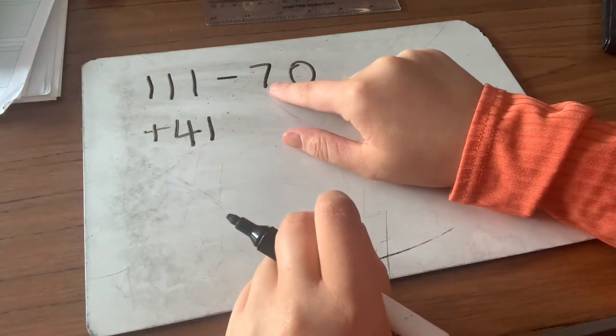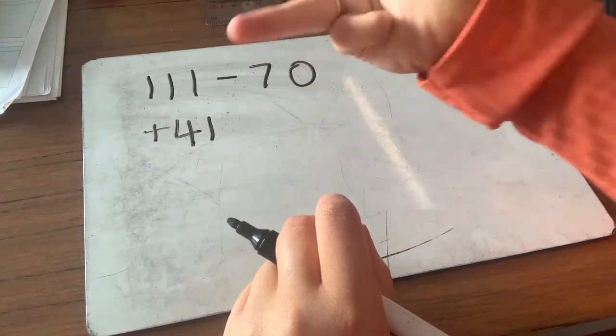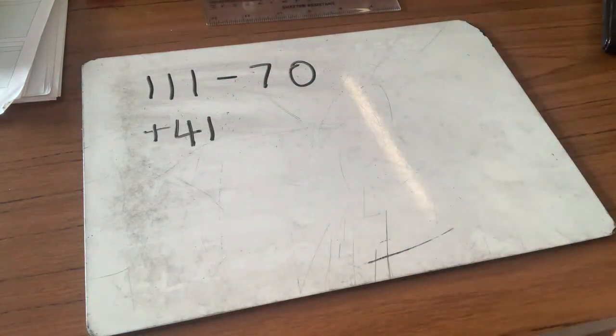The other way I could do it is count on the 10s. From 7 to 11, 8, 9, 10, 11 would be four 10s, plus my 1 would be 41. Same answer either way.